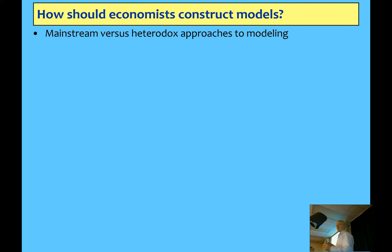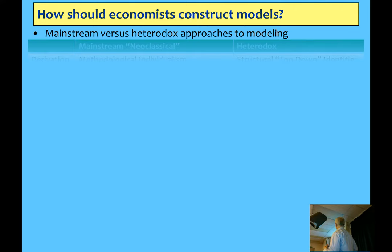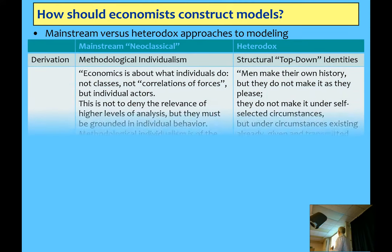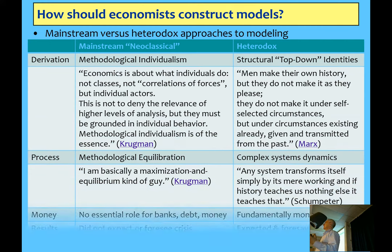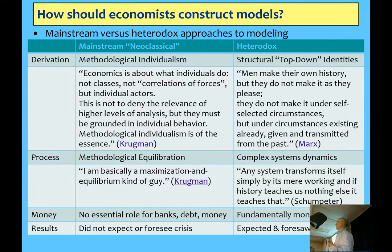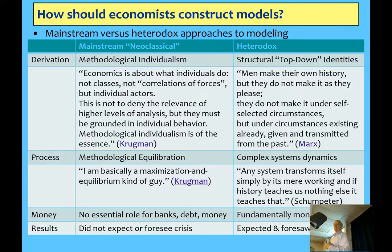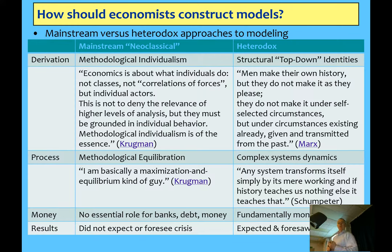What I want to show you here is a table that compares what the mainstream thinks is the right way to do economic modelling with the approach of the school of economic thought that I take. This is summarising some views from Paul Krugman on one side and a range of people on the other. Krugman is a Nobel Prize winner in economics who writes a column for the New York Times. He says that economics is about what individuals do — not about social classes, workers, capitalists, bankers. It's got to be grounded in individual behaviour. What he calls methodological individualism is of the essence.